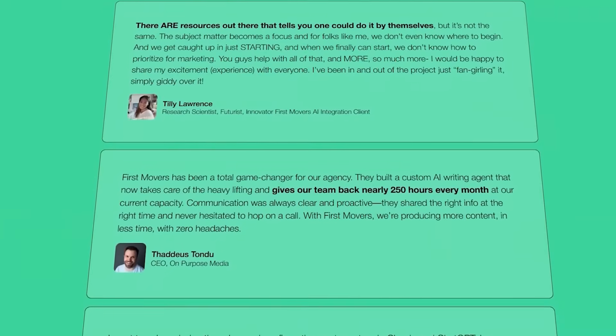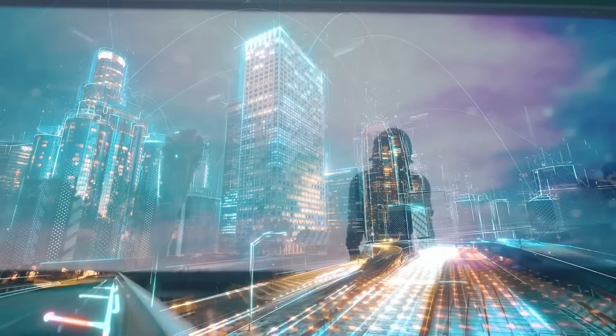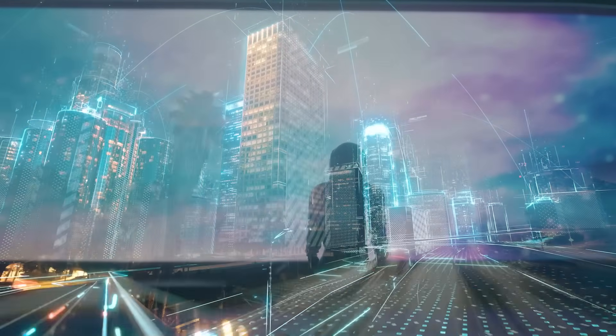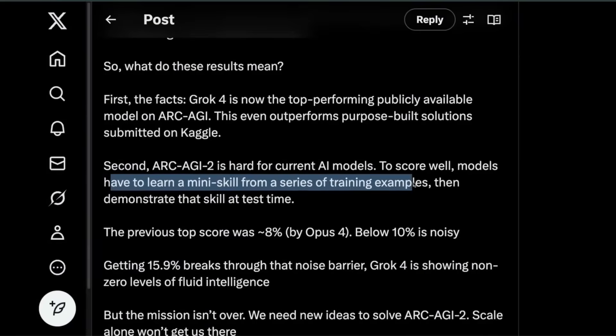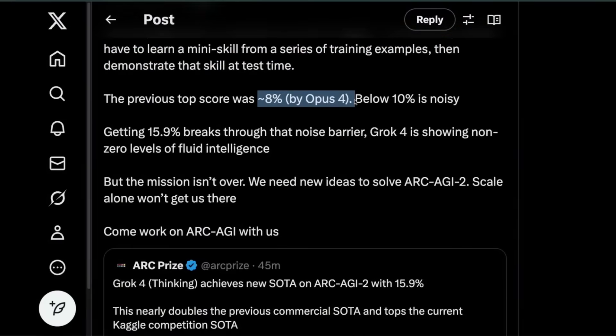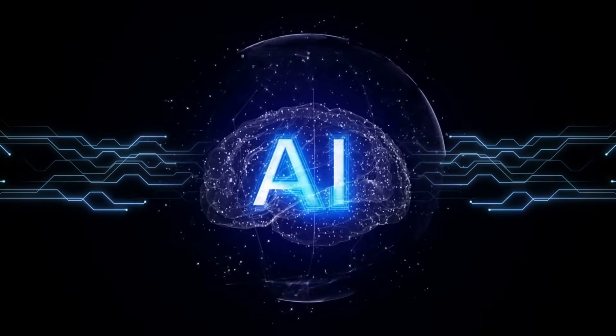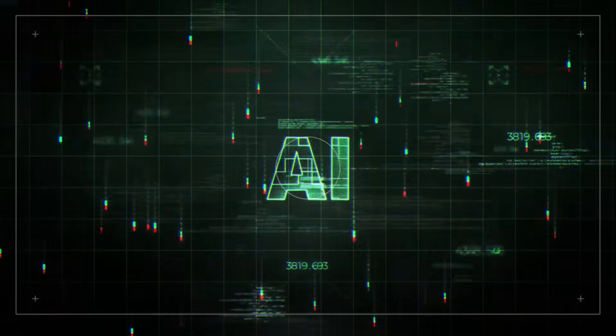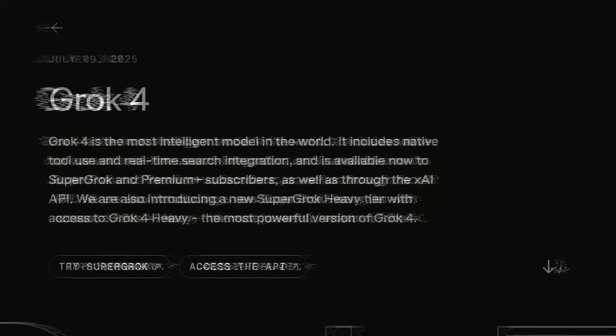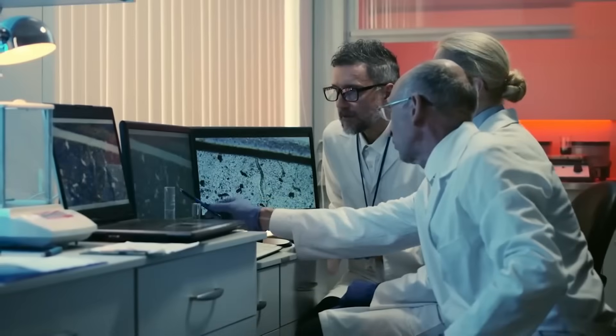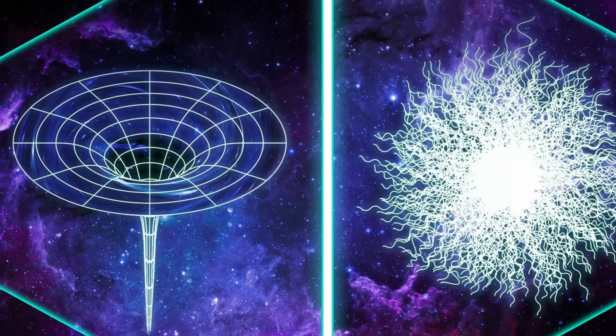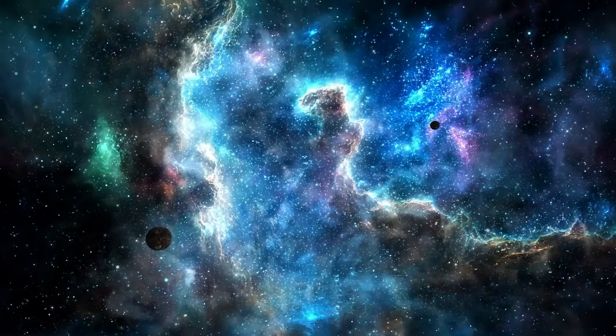New theory number one. The quantum censorship hypothesis. Grok continued with a scenario most people have never heard of. It proposed that the laws of quantum mechanics themselves may actively erase detectable signs of advanced civilizations. The more complex and information-rich a system becomes, the more likely it is to trigger quantum decoherence. Over time, the universe may censor signals that exceed a complexity threshold, like a firewall against visibility.